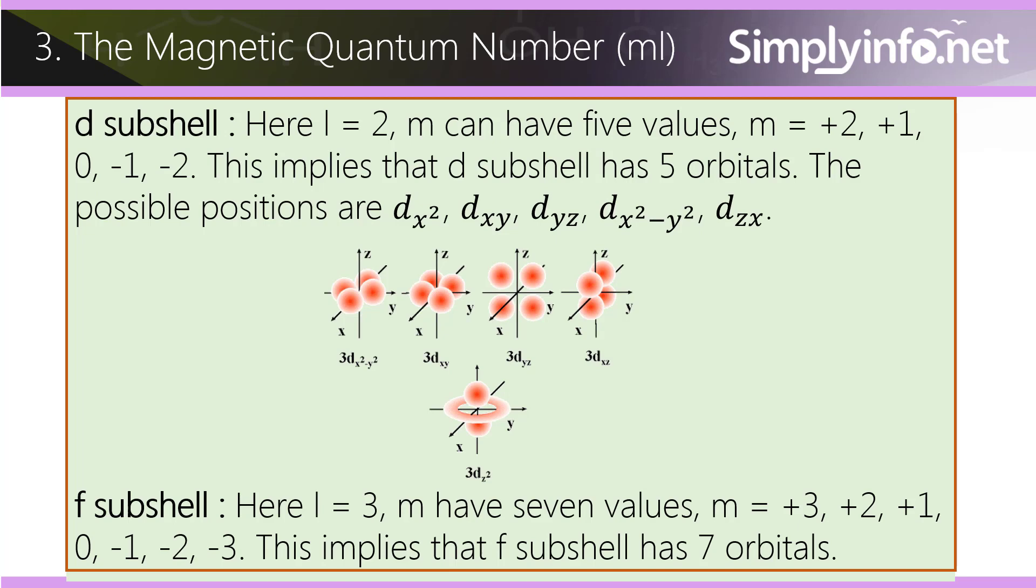f subshell: Here l equals 3. m has seven values: m equals plus 3, plus 2, plus 1, 0, minus 1, minus 2, minus 3. This implies that the f subshell has seven orbitals.